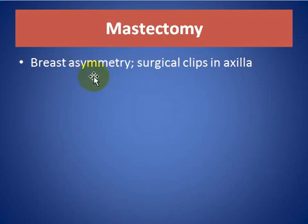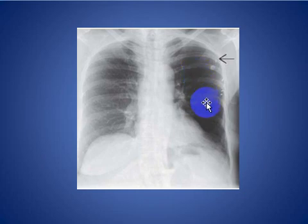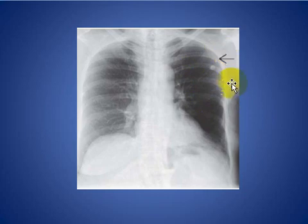For mastectomy: breast asymmetry and surgical clips in the axilla are clue signs for the history of mastectomy. As we see here, on the left side there is a hyperlucent left hemithorax with surgical clips in the left axilla, indicative of prior left mastectomy.